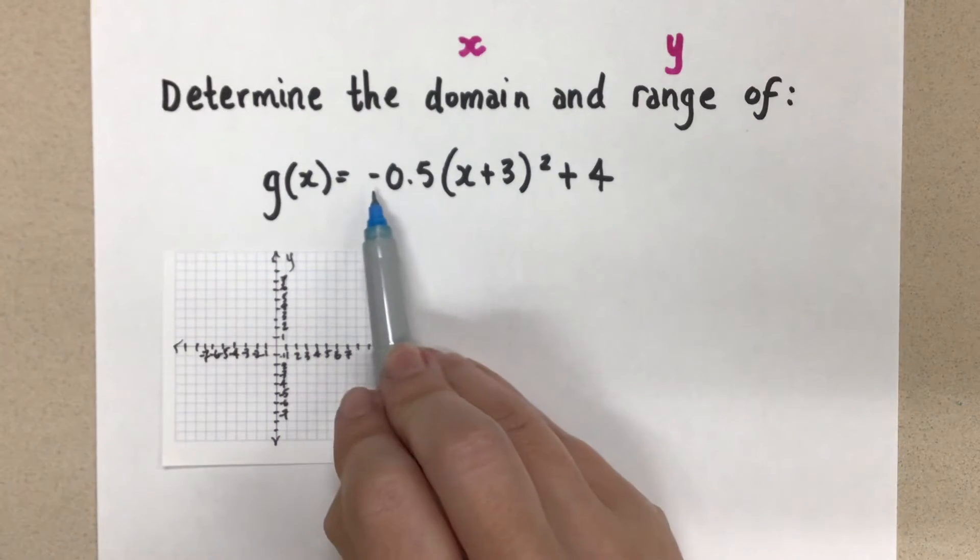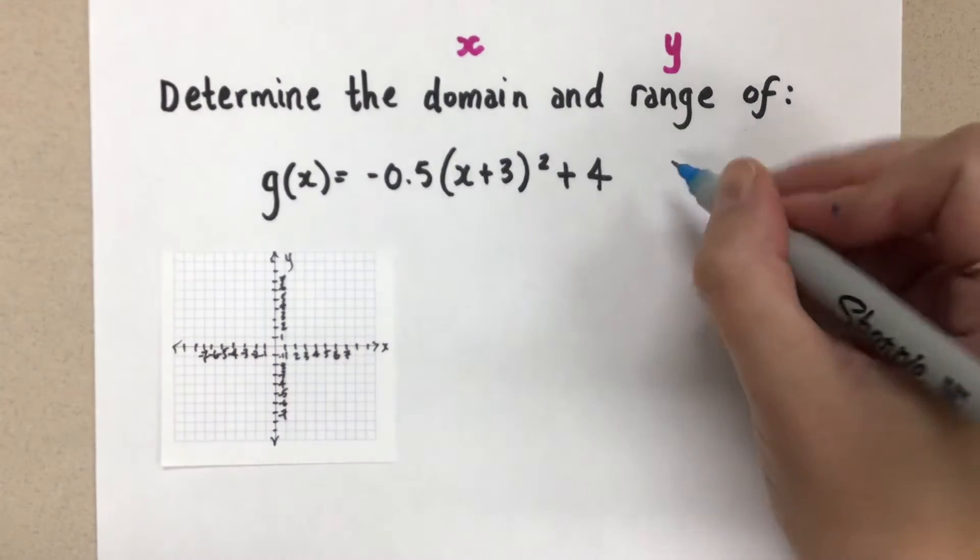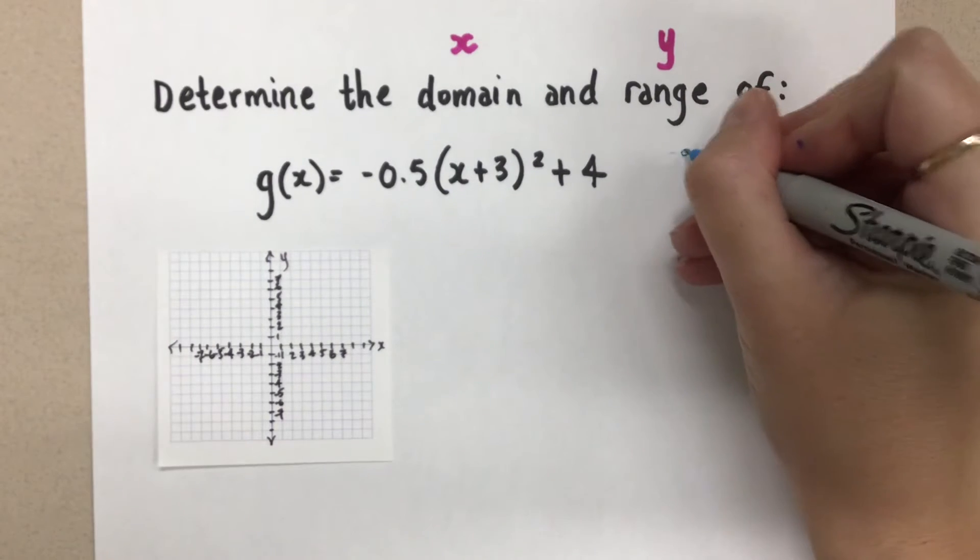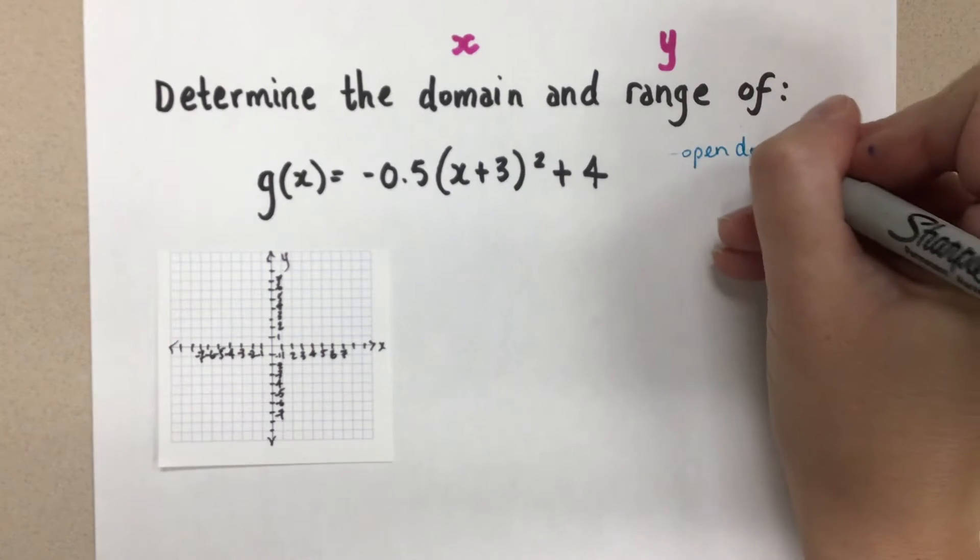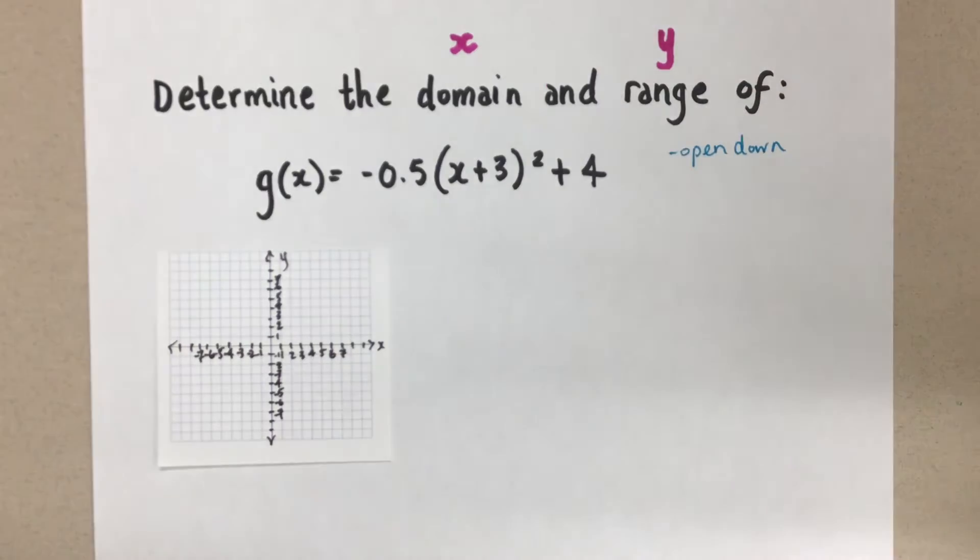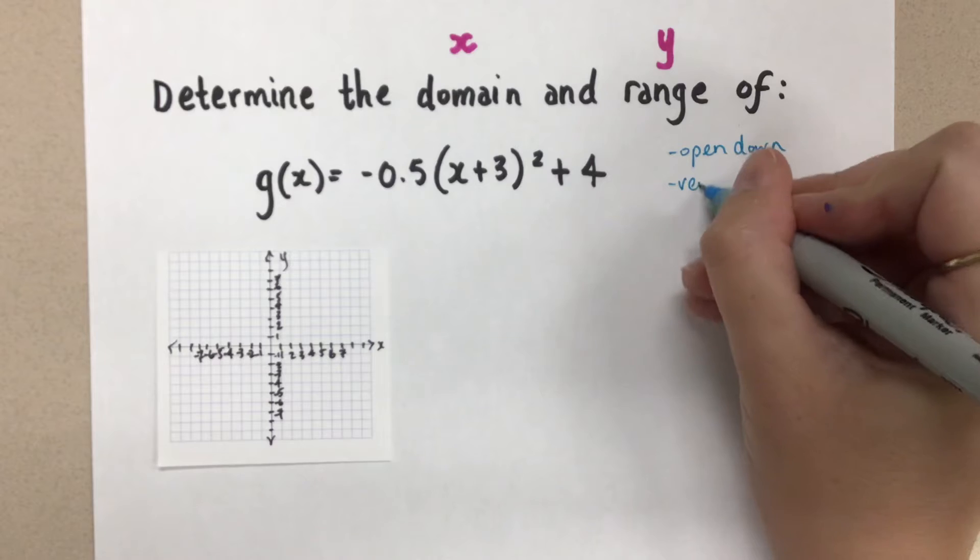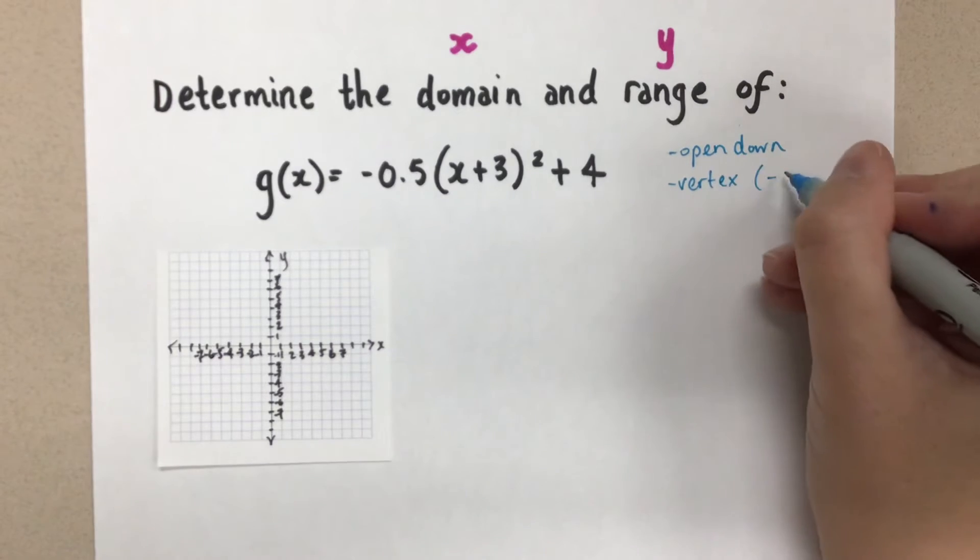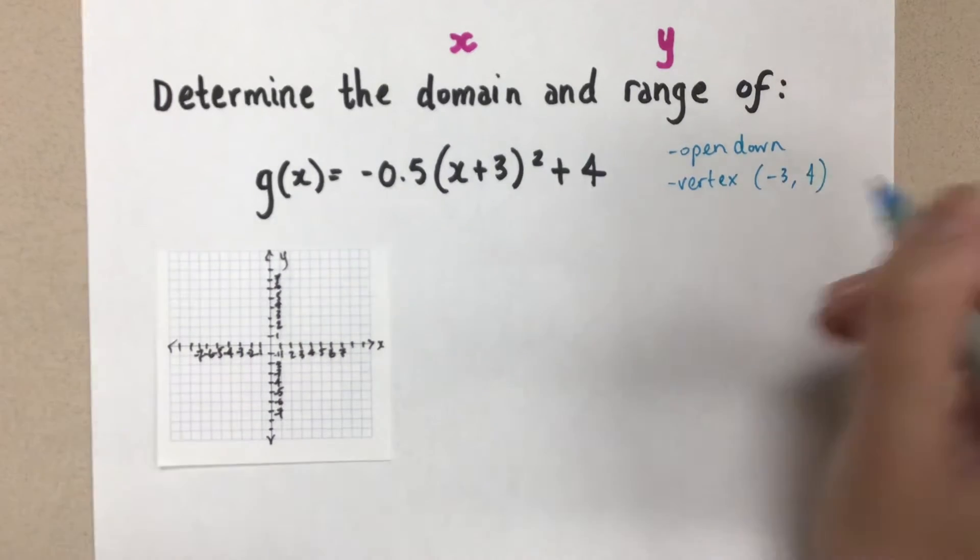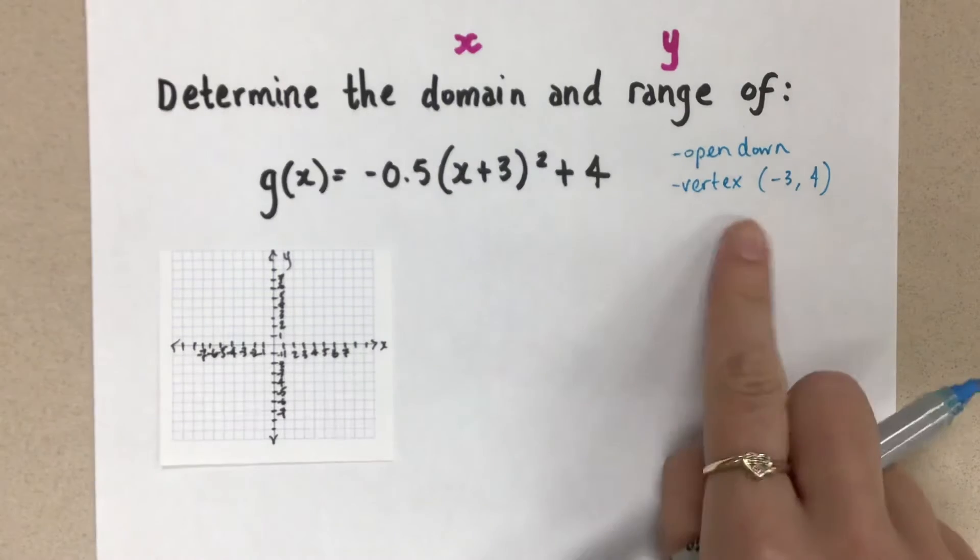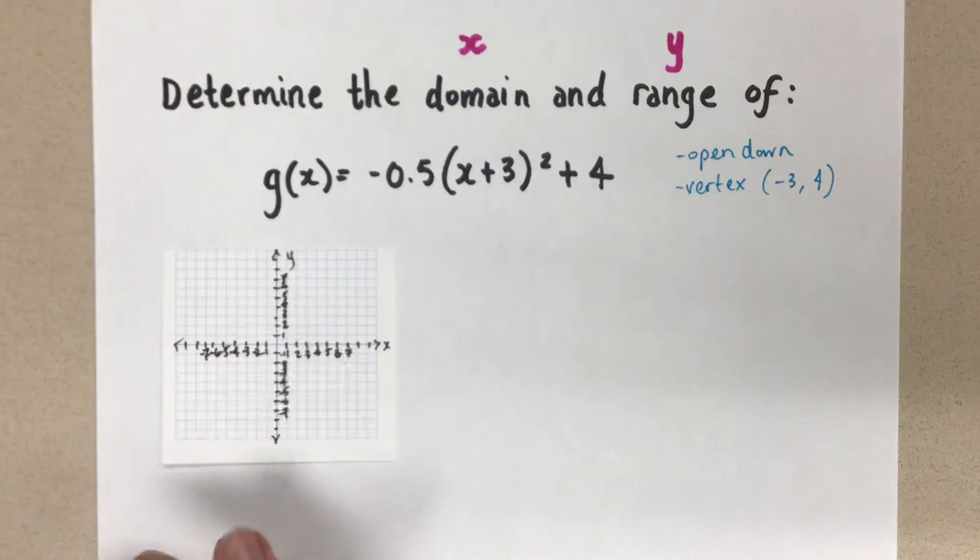This is a parabola which has a negative a value. So I know that it's open down. And it has a vertex here, because it's in vertex form, that is at negative three, positive four.